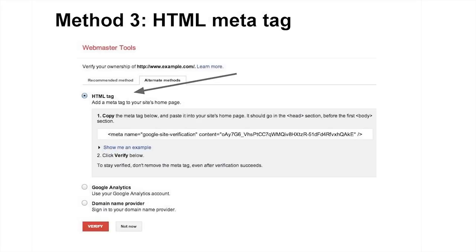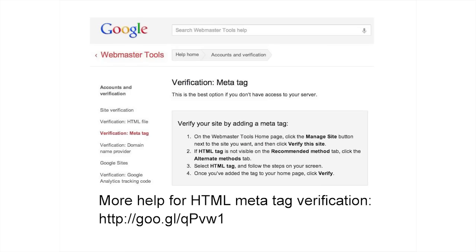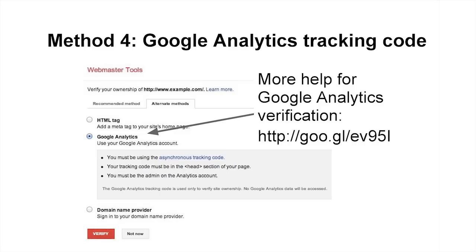Another option for site verification is adding an HTML meta tag. If you're familiar with writing HTML code for your webpage, then this is a great option. Last, if your site already uses Google Analytics and you're an administrator, please see the Google Analytics verification method.